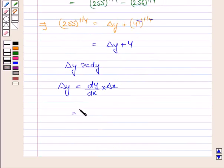Now y is x to the power 1 by 4. So dy by dx will be 1 by 4 into x to the power 1 by 4 minus 1, that is x to the power minus 3 by 4 into delta x. And delta x here is minus 1. So this is equal to 1 by 4 into x to the power 3 by 4 into minus 1.